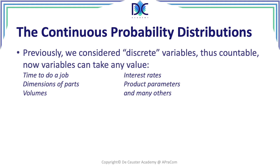In the previous chapter, in the previous presentations, we looked at discrete variables. Basically, these are variables that are countable. And when we look at continuous probability distributions, we're going to consider variables that can take any value.